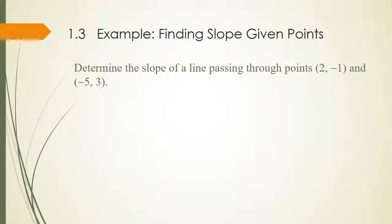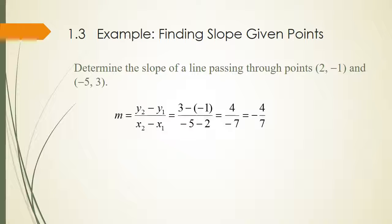Let's find the slope of the line passing through two given points. Using the slope formula, we have 3 minus negative 1 over negative 5 minus 2, and the answer is negative 4 sevenths.